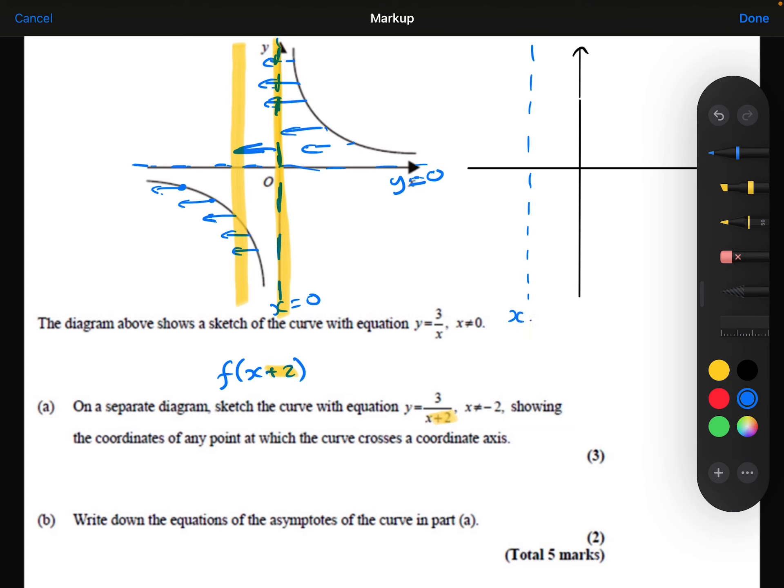So here's our new asymptote. And let's draw the graph in there. It's going to look something like that.